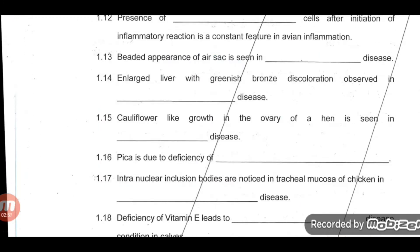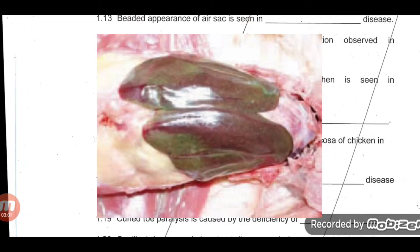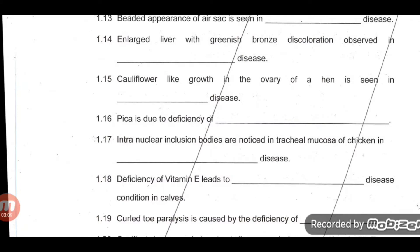Question 12: Enlarged liver with greenish-bronze discoloration is observed in fowl typhoid disease. Question 12: Cauliflower-like growth in the ovary of a hen is seen in Marek's disease.